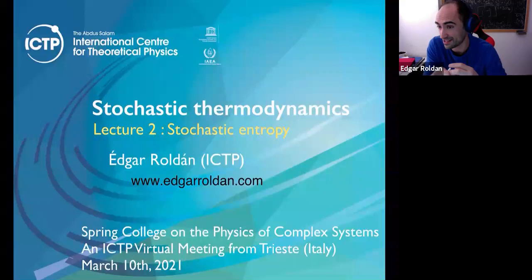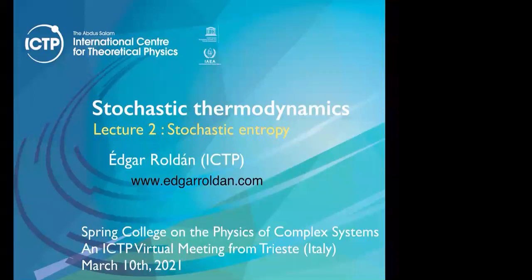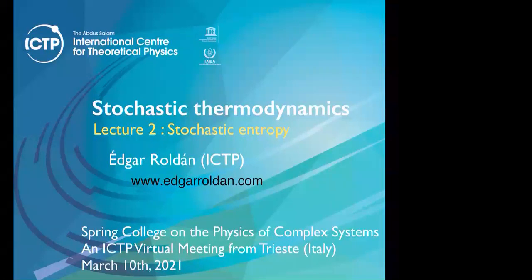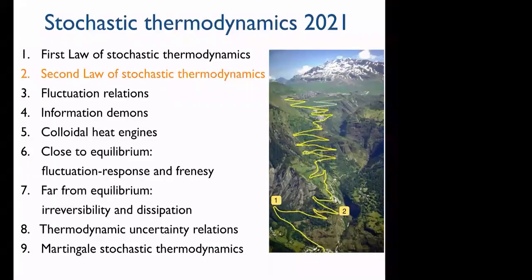Please send me an email and I can send you some references. In the simplest case — an isothermal system — you can use the overdamped approximation and get a good approximation for the heat. Alright, the second lecture is about stochastic entropy. What I'd like to discuss today is the second law in stochastic thermodynamics.